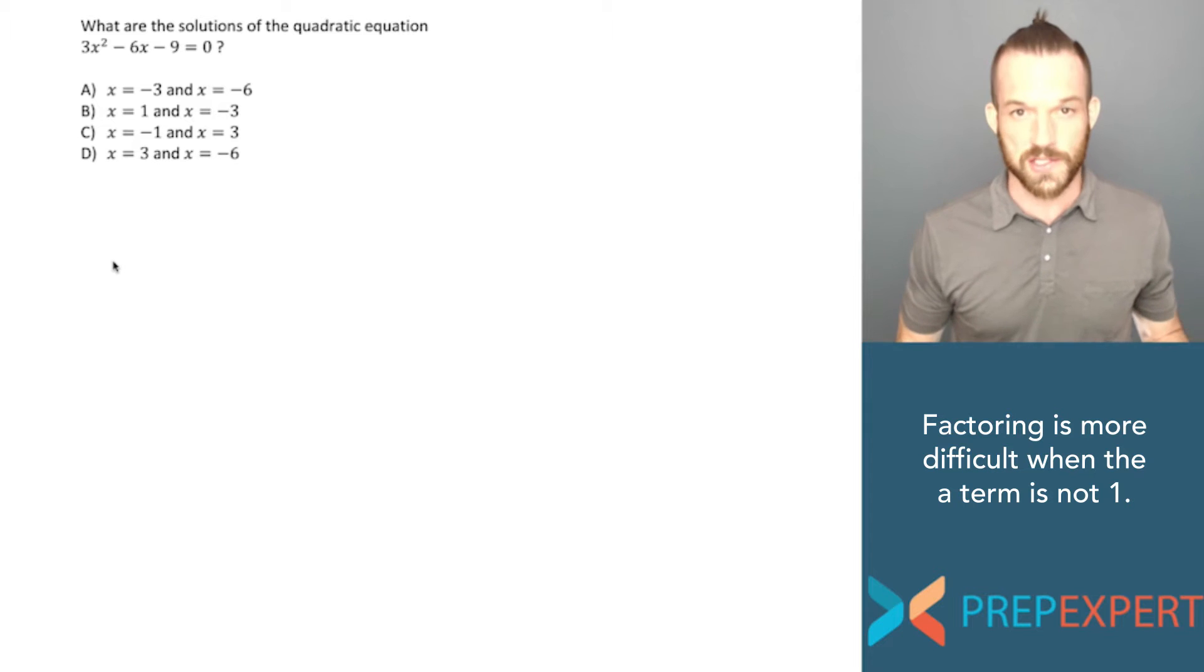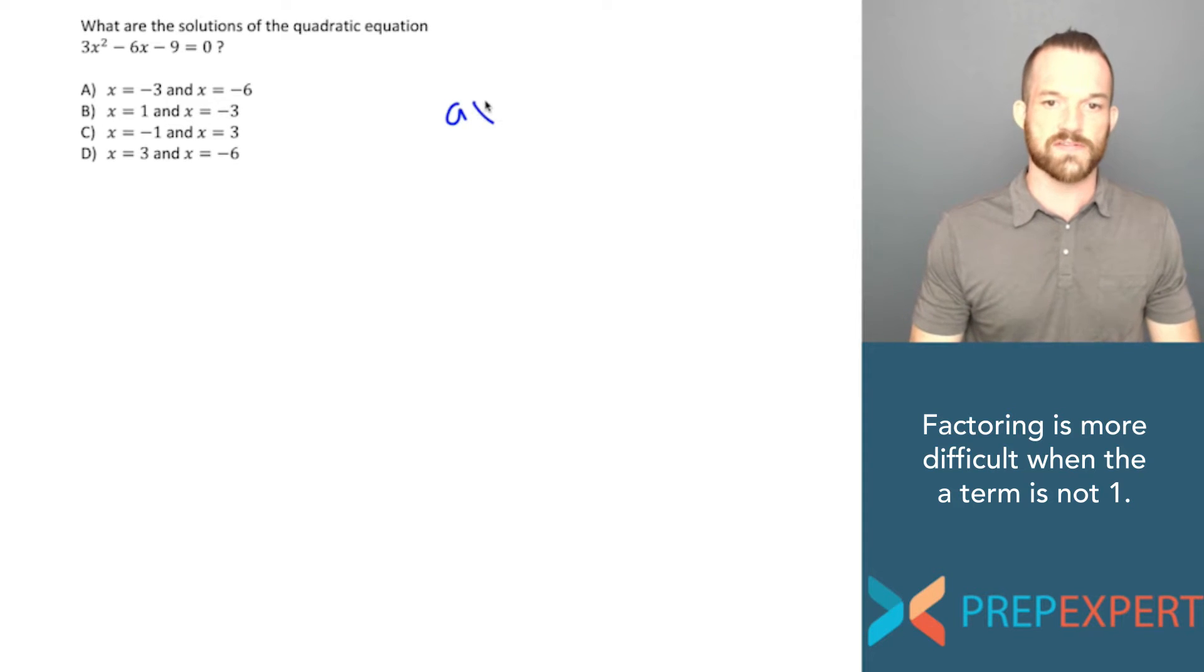So the first thing to know about factoring quadratics is that they'll rarely ever ask you to factor one whose a term isn't one. Let me explain what I mean by that. So to factor a quadratic, I first have to get it into the standard form of a quadratic equation, which means I have to get it in this form, ax squared plus bx plus c equals zero.